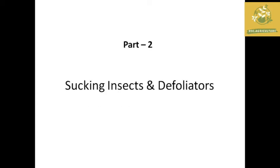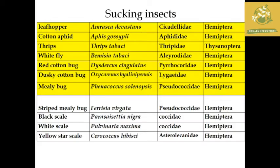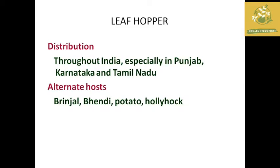In this video we are going to see about the sucking insects as well as the defoliators of cotton. The common name, scientific name, family and order have already been given in the table. Let's look at each and every pest present in cotton as part two of the video.